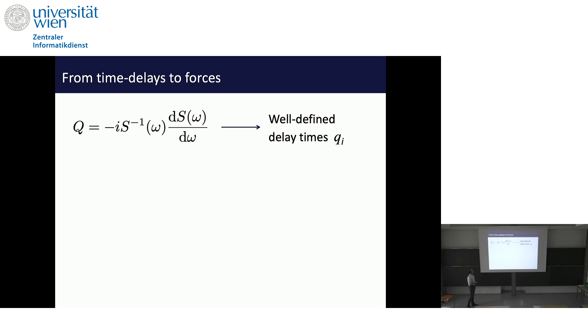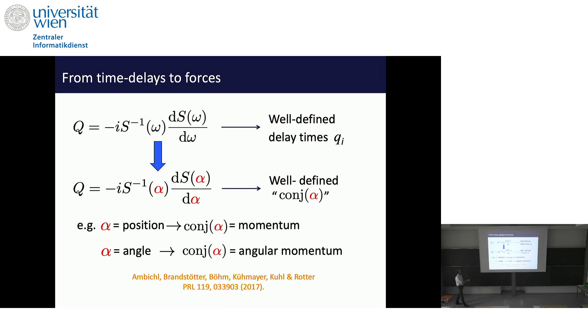I will continue by telling you more about this operator. I've told you that when you take a frequency derivative, you have a time delay operator. But we recently realized that you can also take derivatives of the scattering matrix with respect to another parameter, another system parameter alpha. In the same way as taking the derivative with respect to frequency gives you time, here if you take the derivative, for example, with respect to some position, this operator gives you access to the conjugate quantity of position, which would then be the momentum. Or if you take the derivative with respect to an angle, then the conjugate quantity will be the angular momentum.